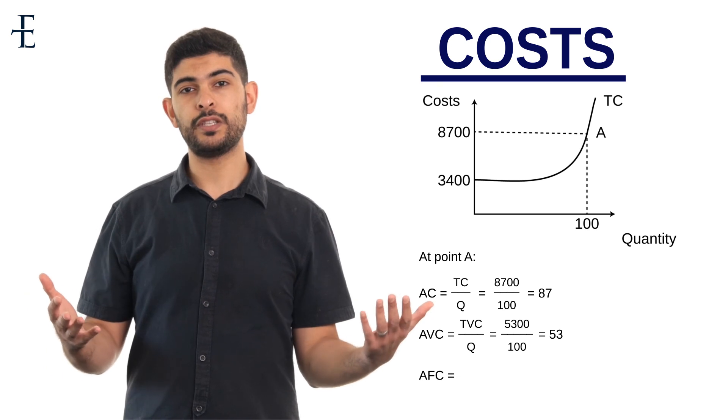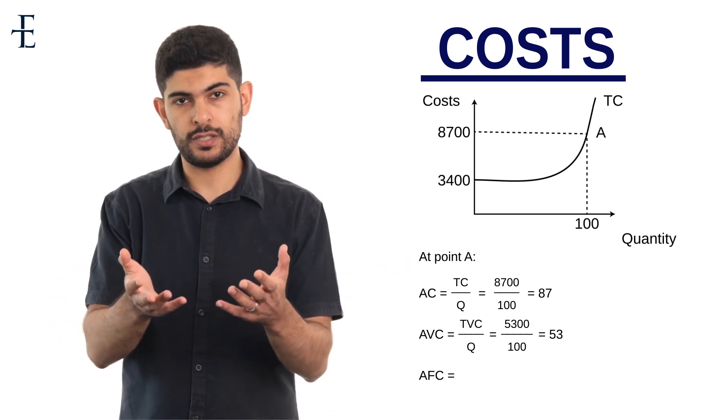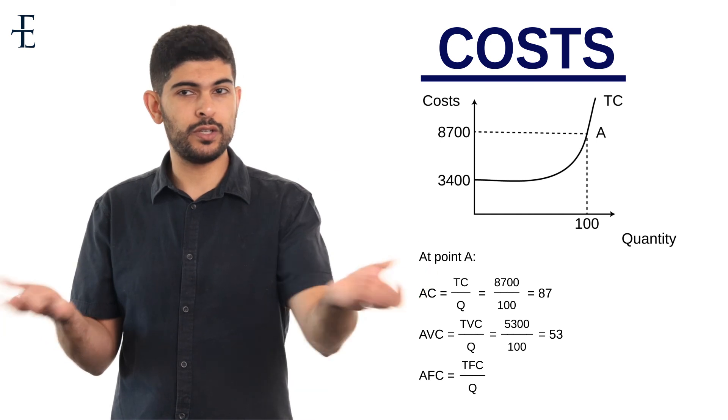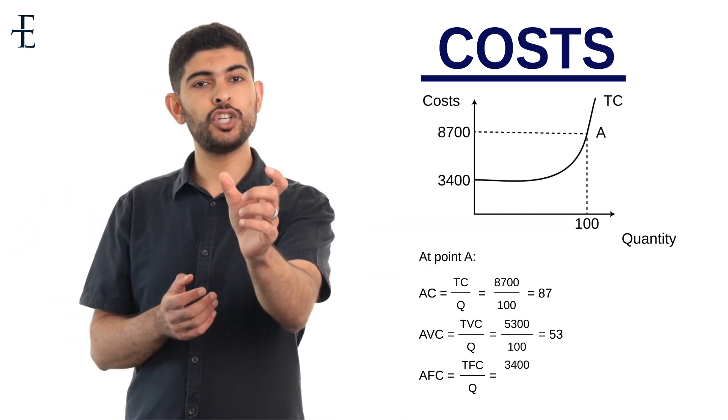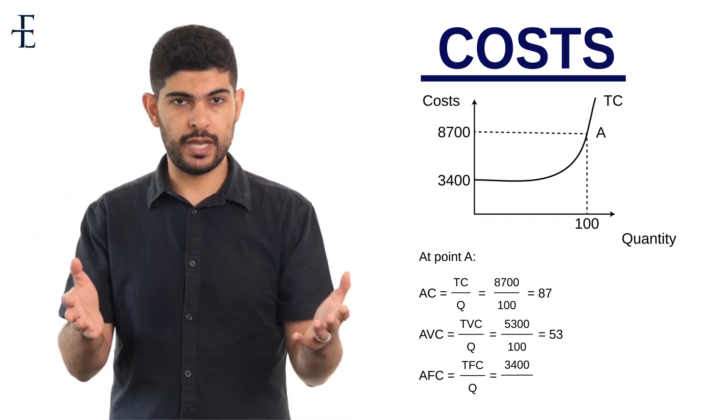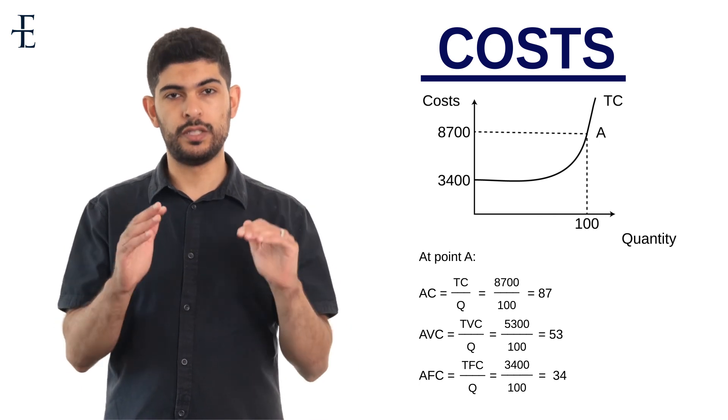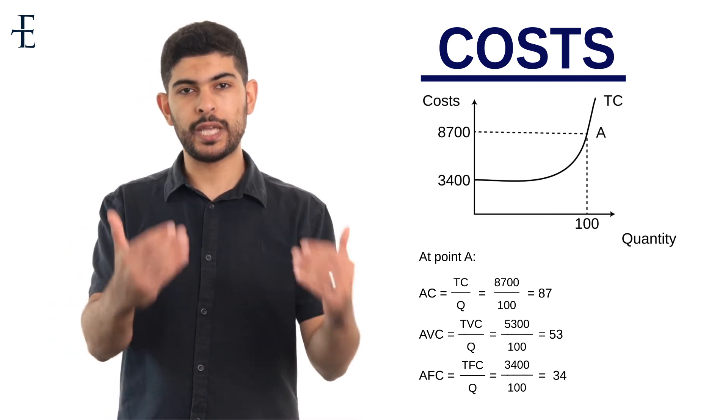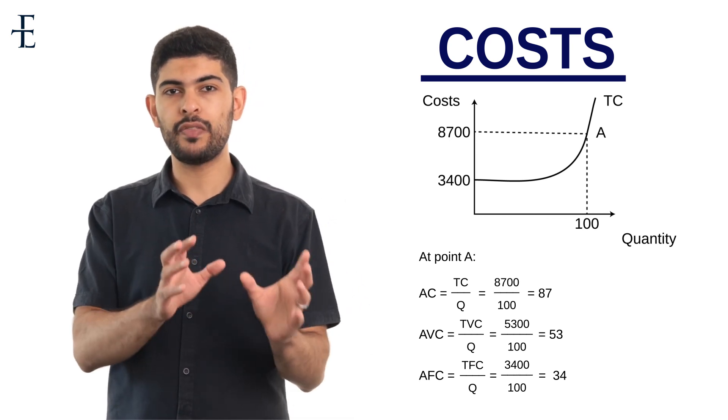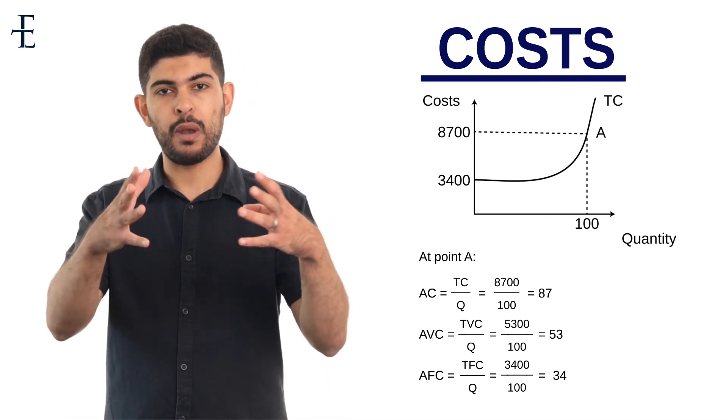The very final thing that we need to do is average fixed cost. Average fixed cost is simply the total fixed cost. It doesn't change. $3,400 divided by the output, which again is 100, which gives us $34. If that wasn't clear, go and do it again because it's imperative that you can plug these formulas in in a diagram like this.